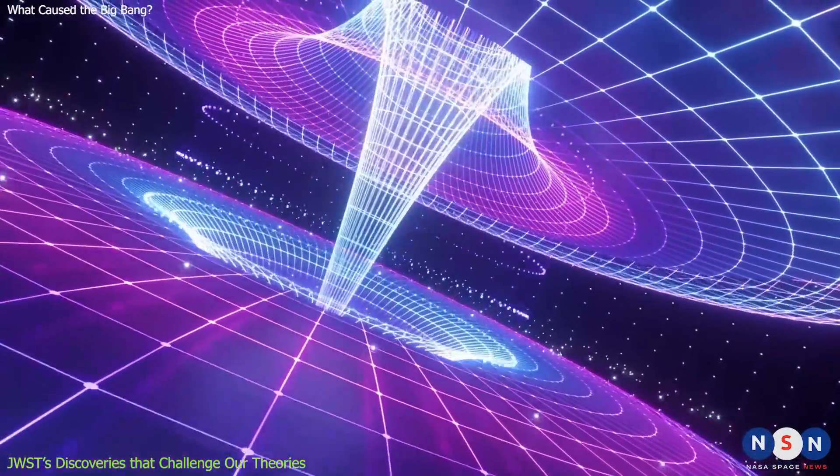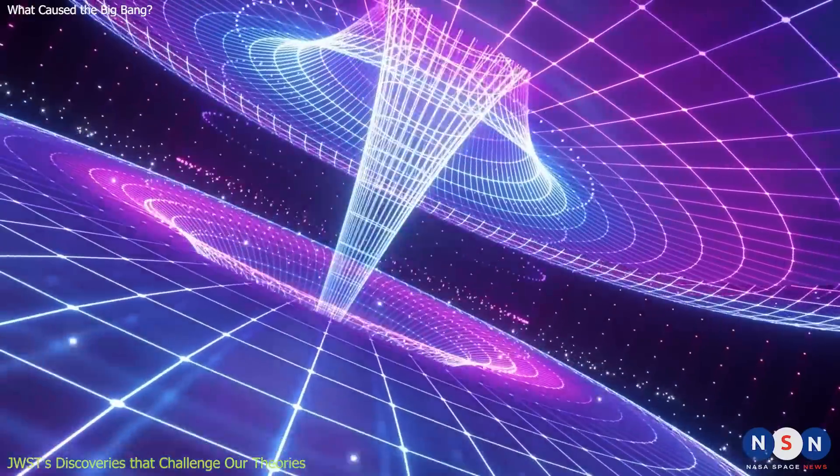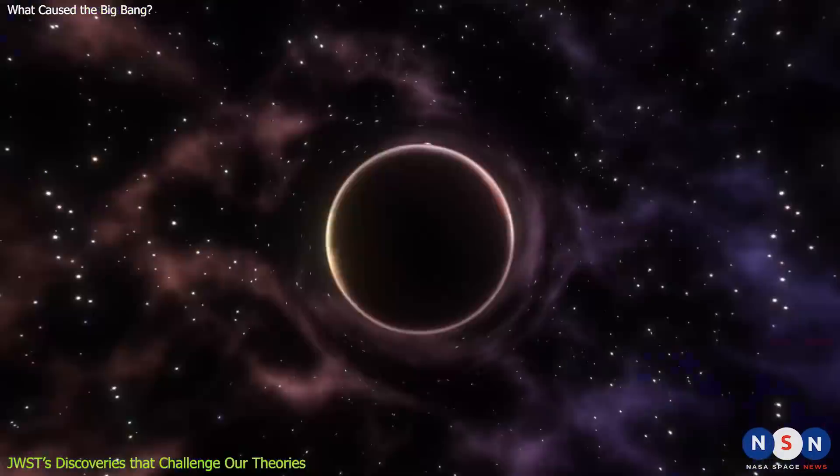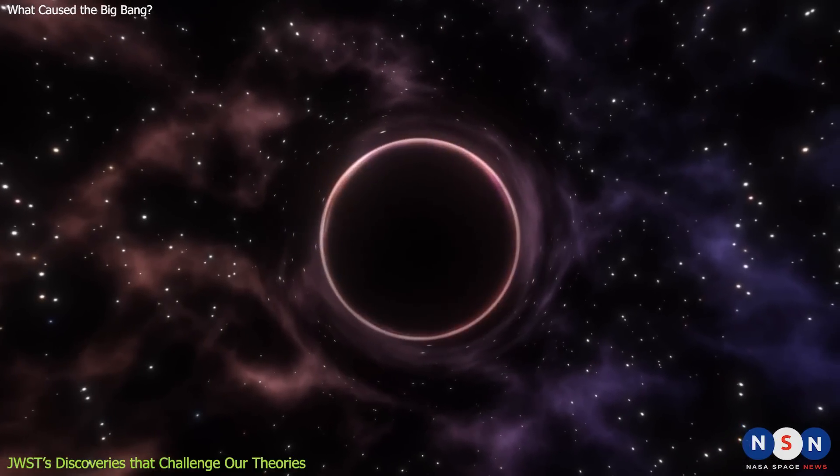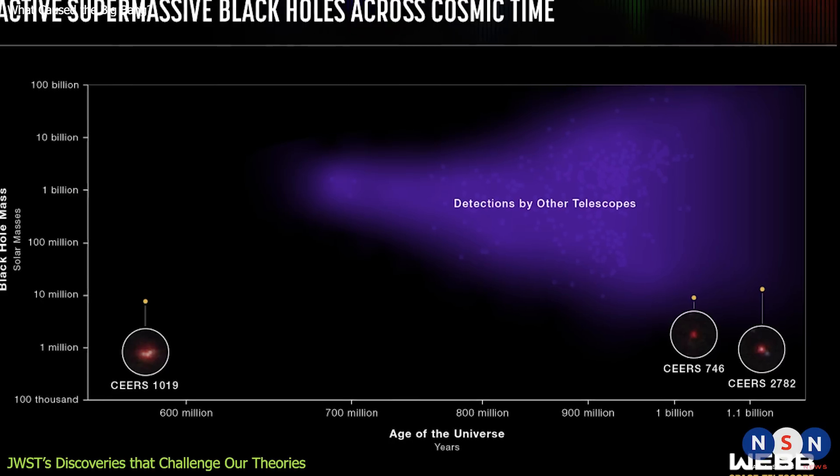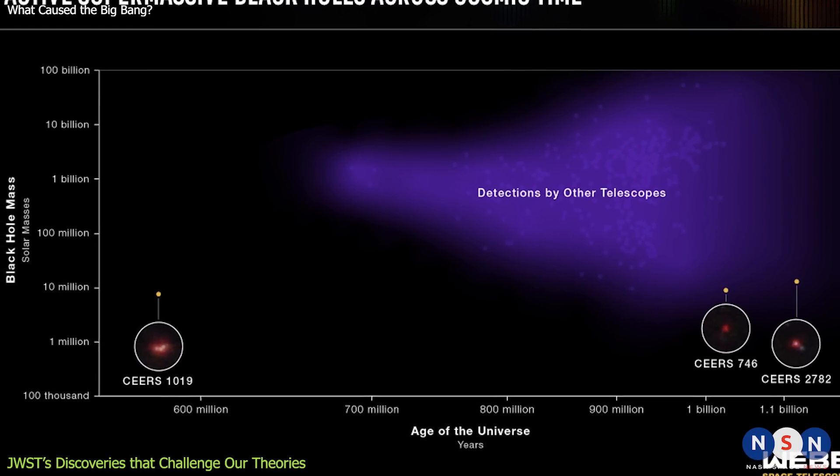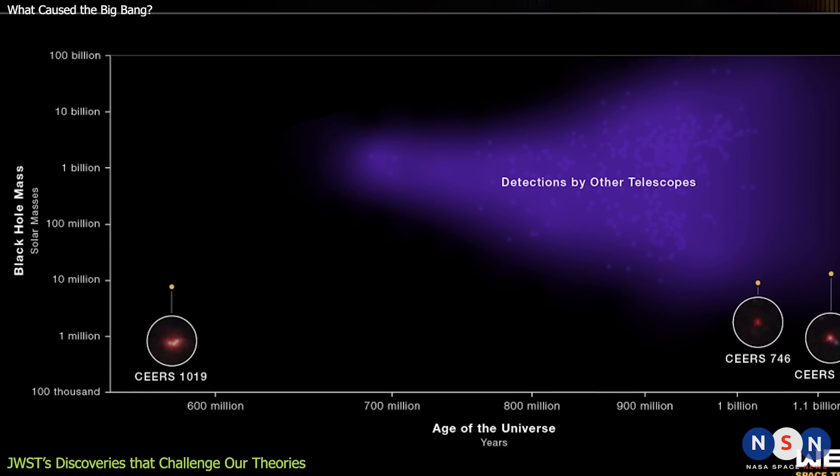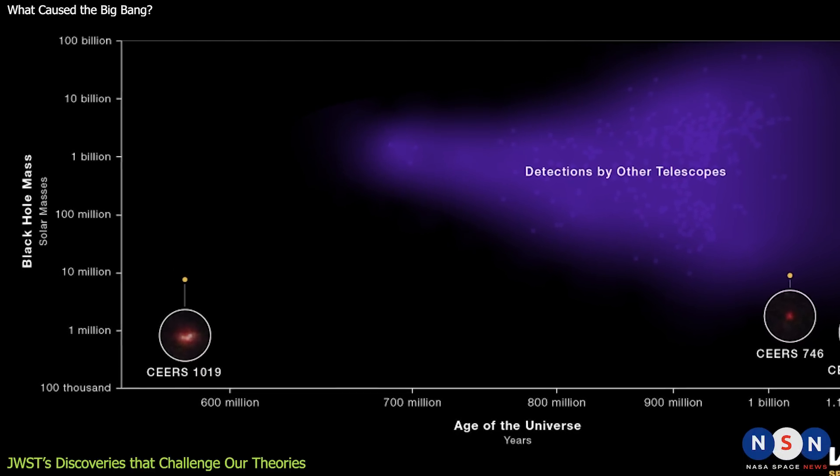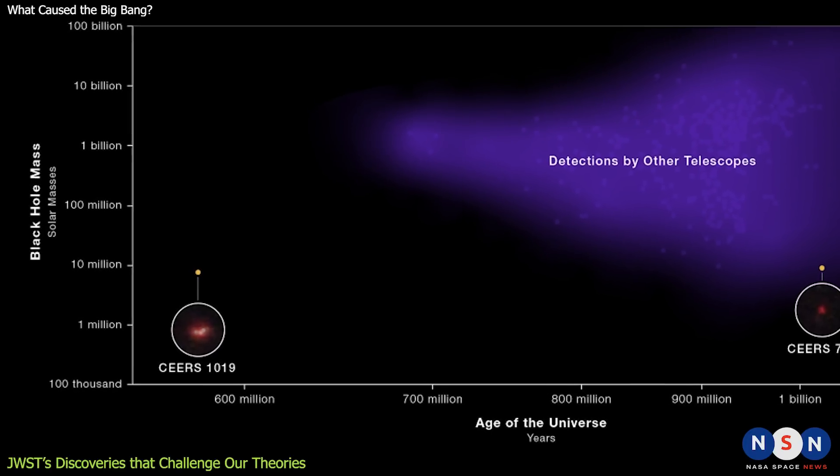It implies that even if a black hole started with 100 solar masses at the time of the Big Bang, it would only reach about 10,000 solar masses by the time this black hole existed. That's still far from 1.6 billion. So either this black hole somehow violated the Eddington Limit, or it had a different origin than most black holes we know of.